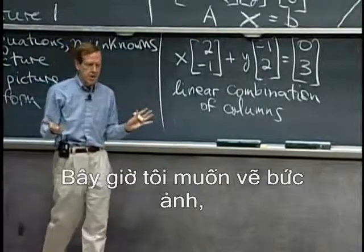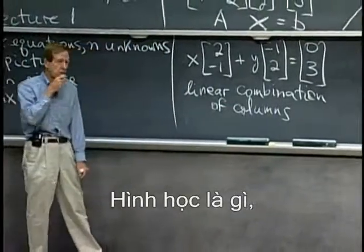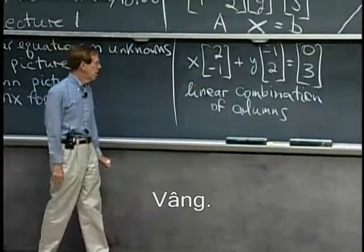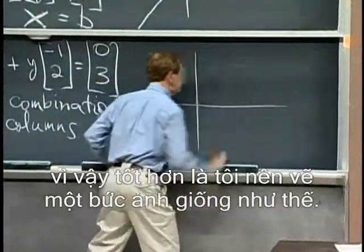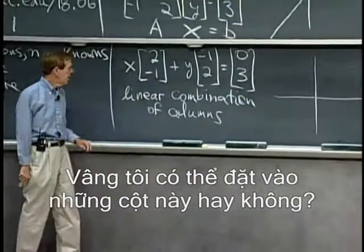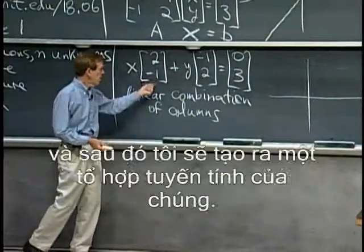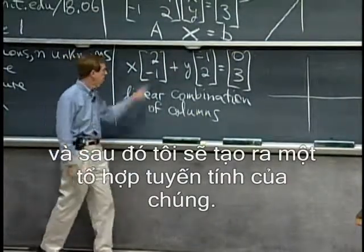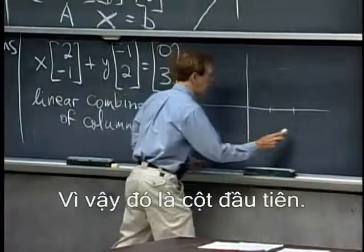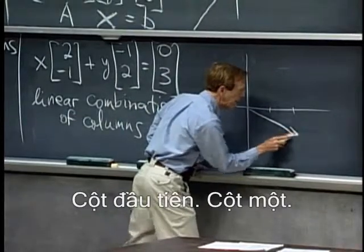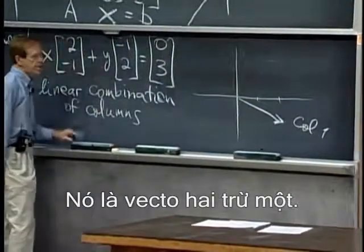Now I want to draw a picture that represents this — this is algebra — what's the geometry, what's the picture that goes with it? So again, these vectors have two components, so I draw a picture like that. Can I put down these columns? I'll draw these columns as they are and then do a combination of them. So the first column is over two and down one — there's the first column, column one. It's the vector two, minus one.